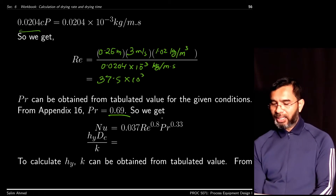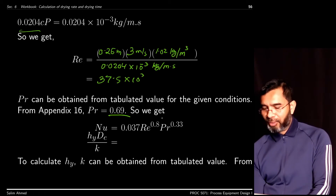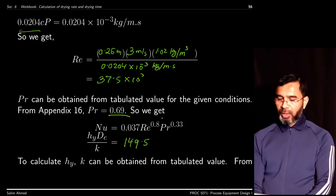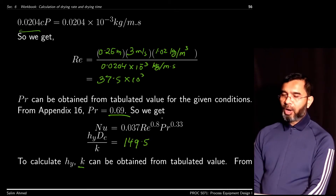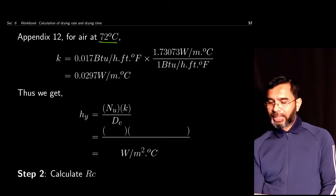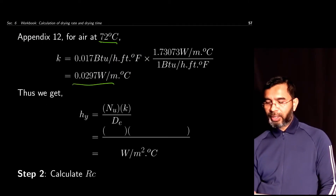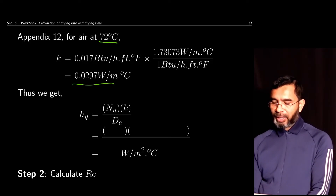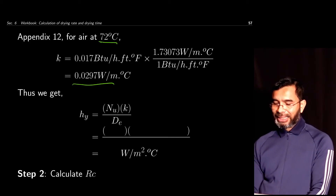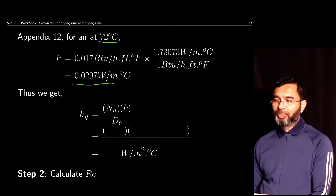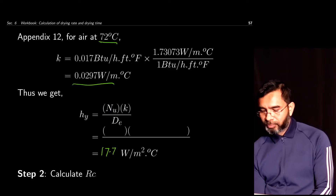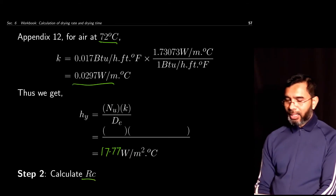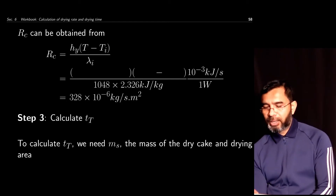Plugging these values into the Nusselt number correlation gives Nu = 149.5. The thermal conductivity of air at 72°C from tables is k = 0.0297 W/(m·°C). Using Nu = hy·De / k and solving for hy gives hy = 17.77 W/(m²·°C). With hy known, we can now calculate Rc.